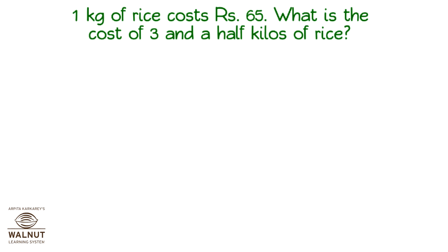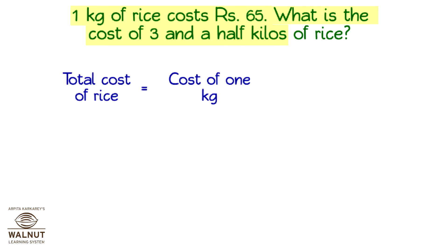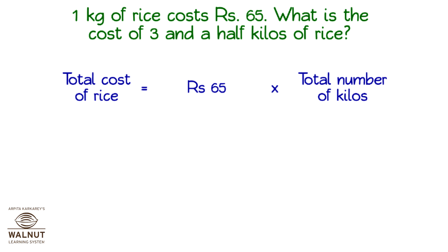1 kg of rice costs Rs. 65. What is the cost of 3 and a half kilos of rice? What do we have to find out? The total cost of rice. What do we know? The price for 1 kilo and the number of kilos. We know the price for 1 kilo and we have to find the price for many kilos. This is obviously a multiplication problem. So, the total cost is the cost for 1 kilo multiplied by the number of kilos. The cost for 1 kilo is Rs. 65, and there are 3 and a half kilos, which we write as 3.5 kilos.